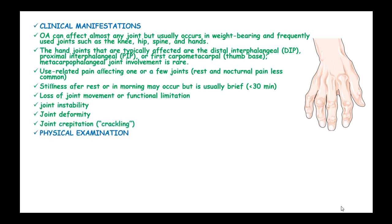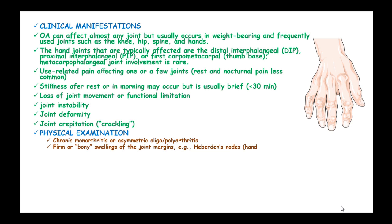On physical examination, chronic monoarthritis or asymmetric oligoarthritis may be present. These may show bony swelling of the joint margins, such as Heberden's nodes which are swellings on the distal interphalangeal joints, or Bouchard's nodes which are swellings on the proximal interphalangeal joints.